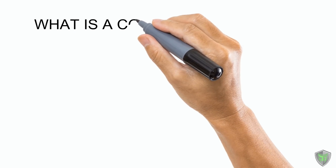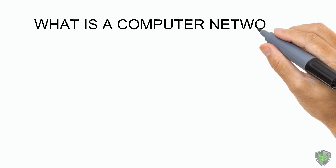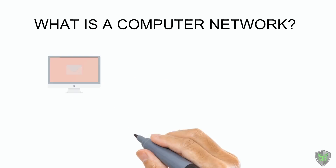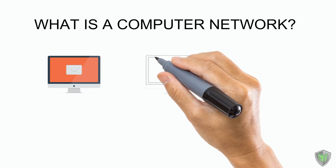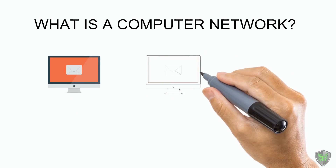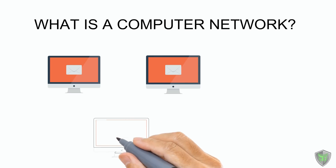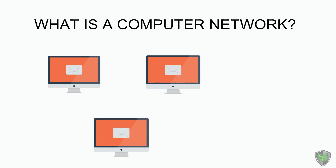What is a Computer Network? In the simplest term, a computer network is a group of computers connected with each other. Let's say I have one computer here, another here, and the third one here. These are independent computers and cannot communicate with each other. If we connect these three computers together, it's called a computer network.